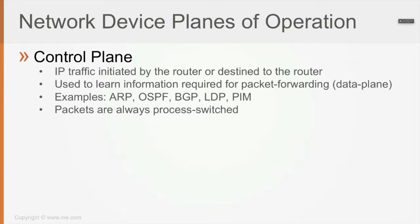Each of those three main network devices begins operation through what is called the control plane. Their operation is carried out through a set of planes — three in number — one of them being the control plane. The control plane identifies all traffic, whether IP or non-IP, that is either initiated by the router or destined to the router.